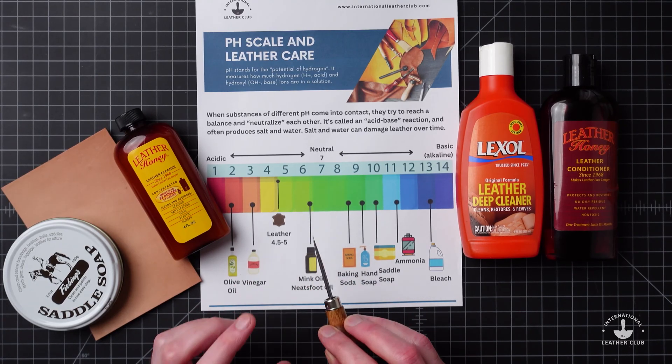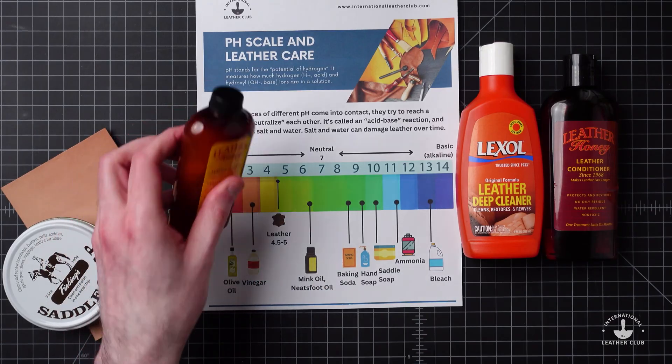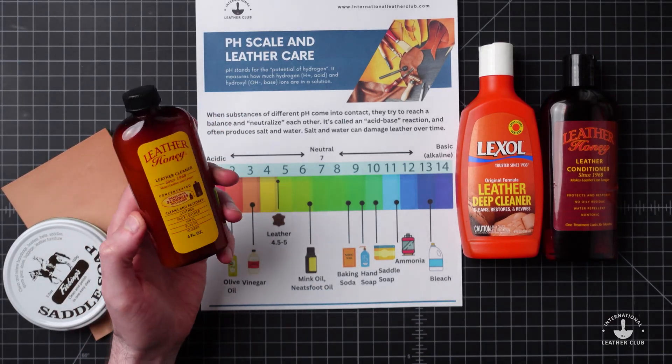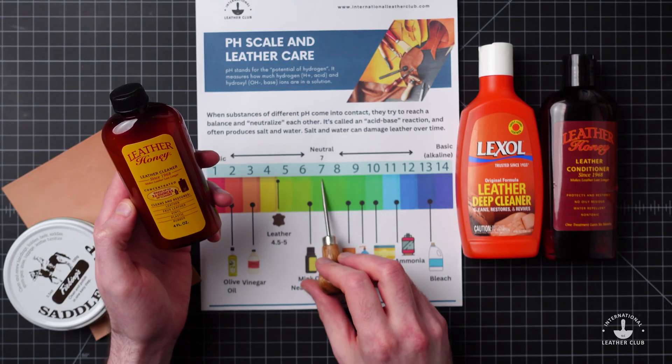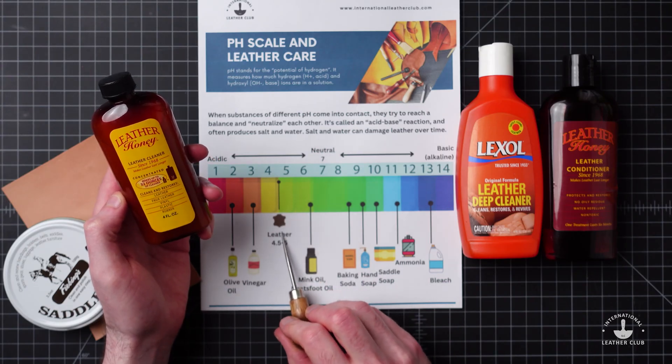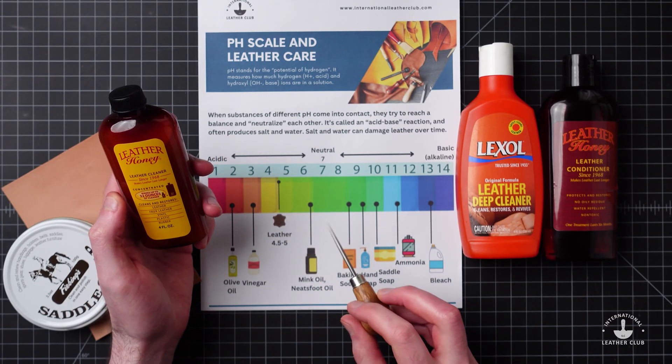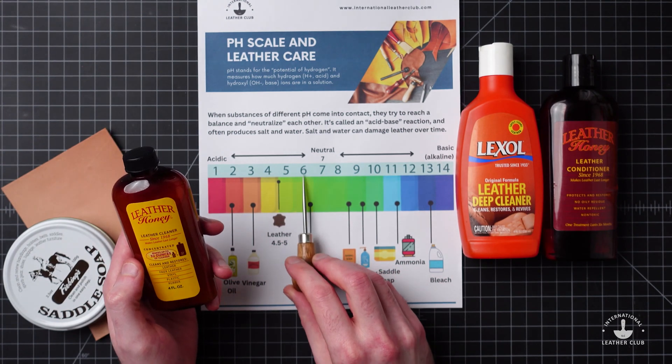It's going to be most helpful to choose leather cleaners and conditioners that are pH balanced and closely to a neutral pH, such as a 7, or close to a leather pH which is around 4.5 to 5. At the neutral element 7, it reacts differently than something around it like a 6 or an 8, which is kind of counterintuitive.